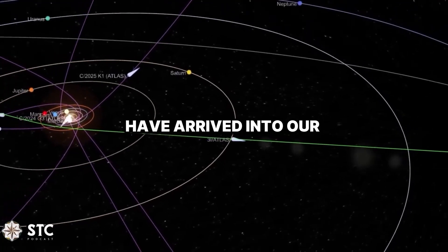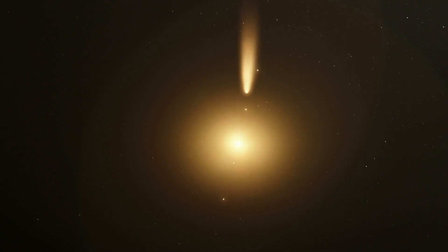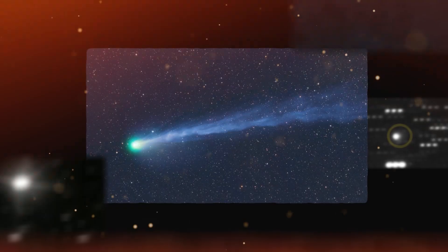3i Atlas is not alone. A flock of comets have arrived into our inner solar system. These aren't just slightly worse, they represent a whole new level of cosmic danger, a hidden truth about our place in the galaxy.